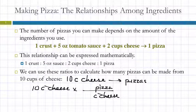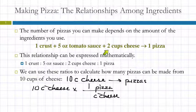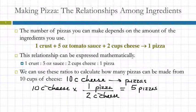Two cups of cheese per pizza, or one pizza per two cups of cheese. I've got my units in here — I just look in the equation and look for the coefficients. One pizza from two cups of cheese. That'll give us five pizzas. What's important is that you understand how I wrote this out.